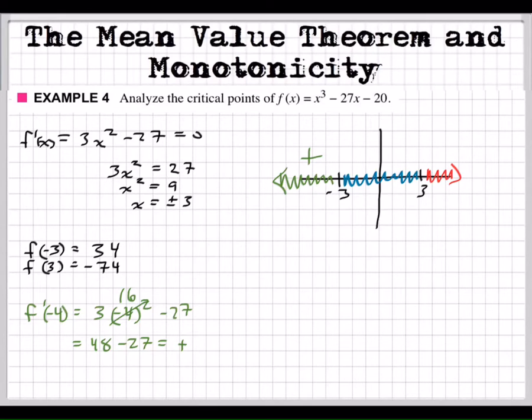Now what about the blue interval? Which number would you guys like to test? Yeah, let's plug in zero. That's a magical number. We have three times zero squared. And we're going to subtract 27 from that. That's going to be negative 27, right? Okay, so that's negative. So it's negative in this interval.